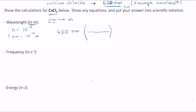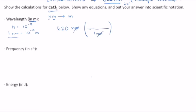On the bottom you're going to put 1 nm so that nanometers will cancel out, and then on the top, what it's equal to — 10 to the minus 9 meters. So this is going to be 620 times 10 to the minus 9 meters. That's what we're trying to get to.